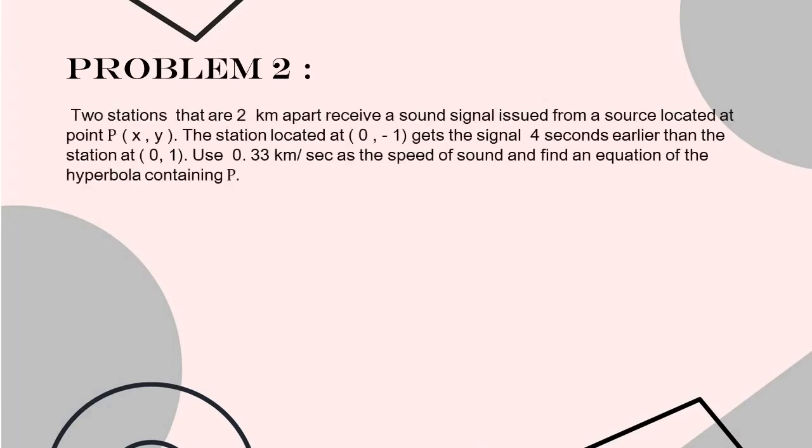Moving on to our next problem. Two stations that are 2 kilometers apart receive a sound signal issued from a source located at point P with coordinates (x, y). The station located at (0, -1) gets the signal 4 seconds earlier than the station at (0, 1). Use 0.33 kilometers per second as the speed of sound and find an equation of the hyperbola containing P.